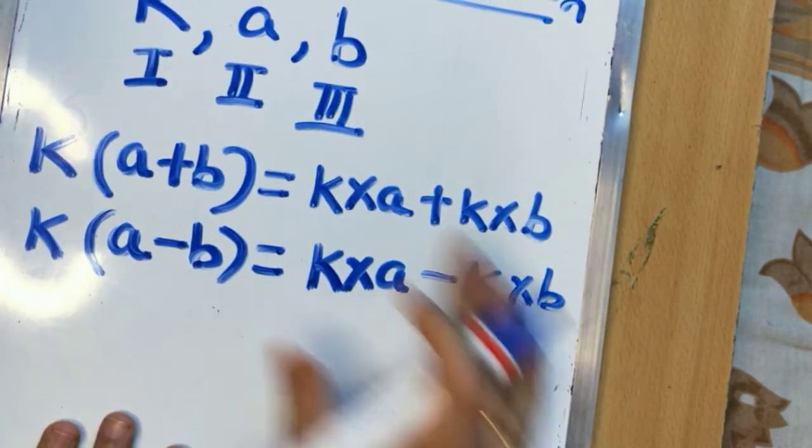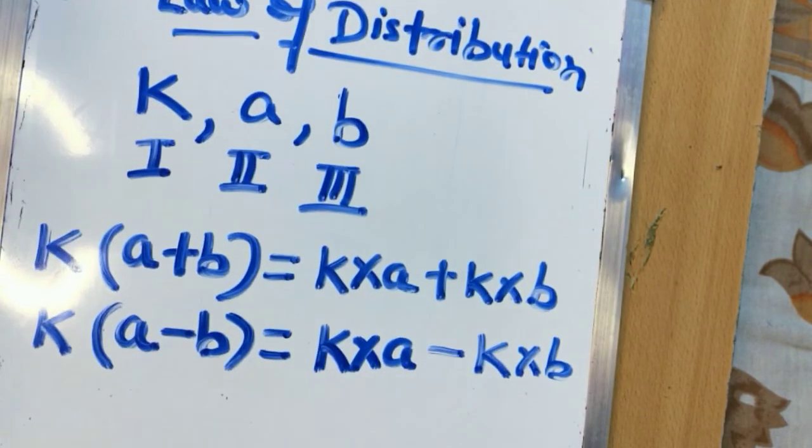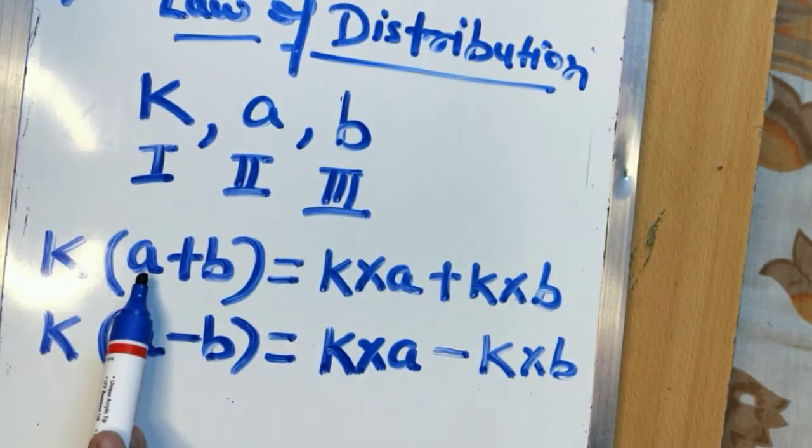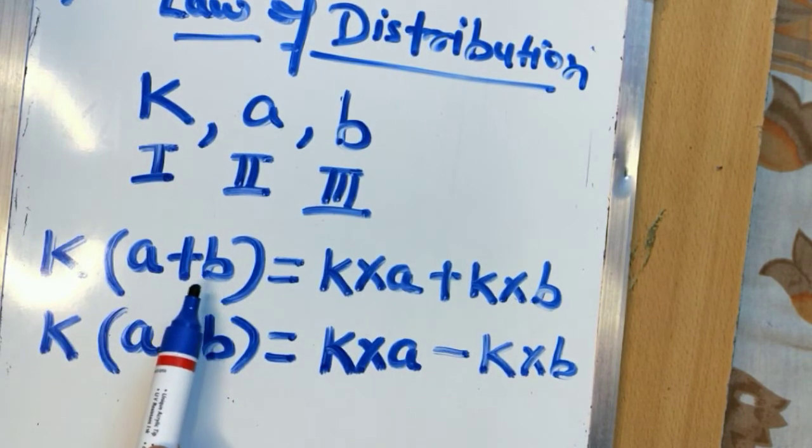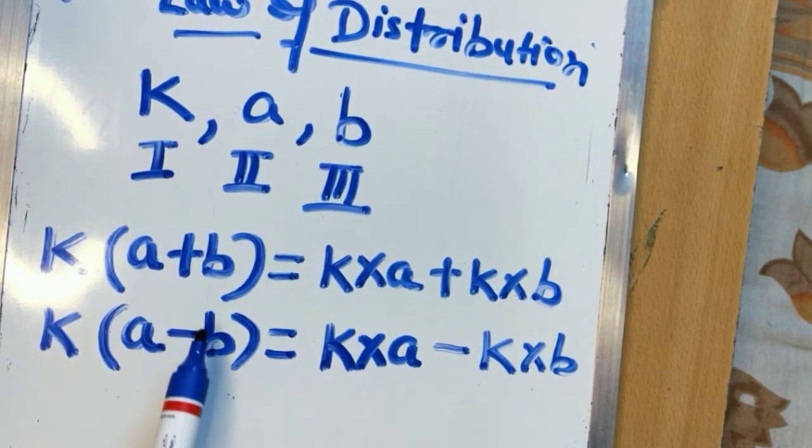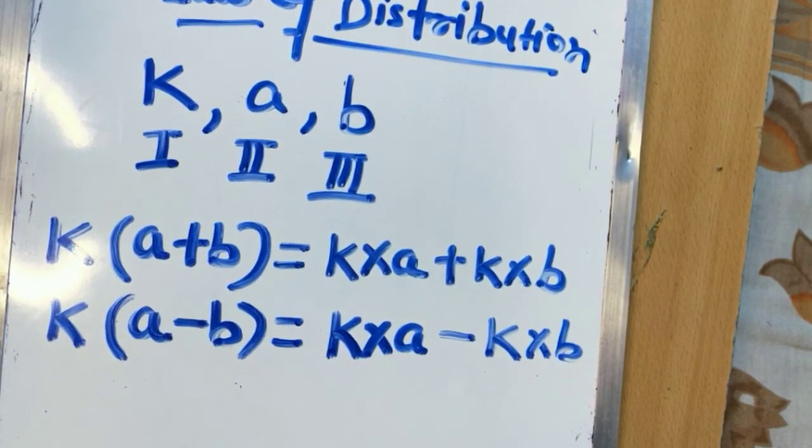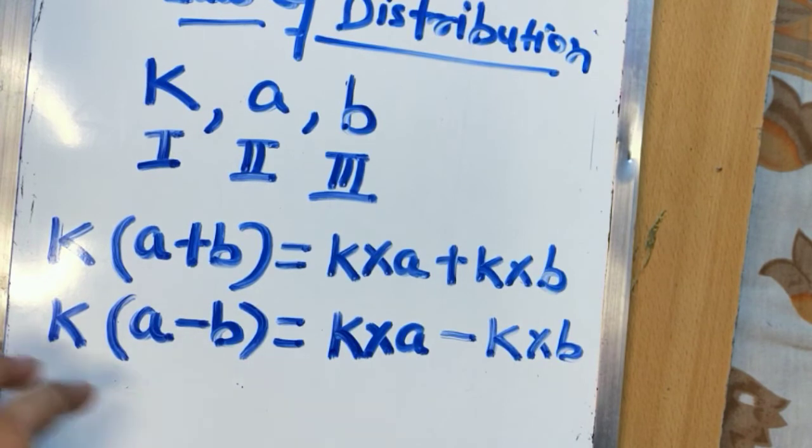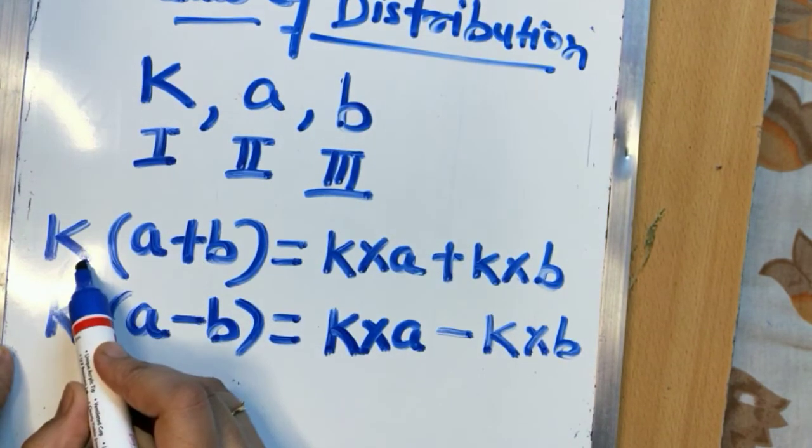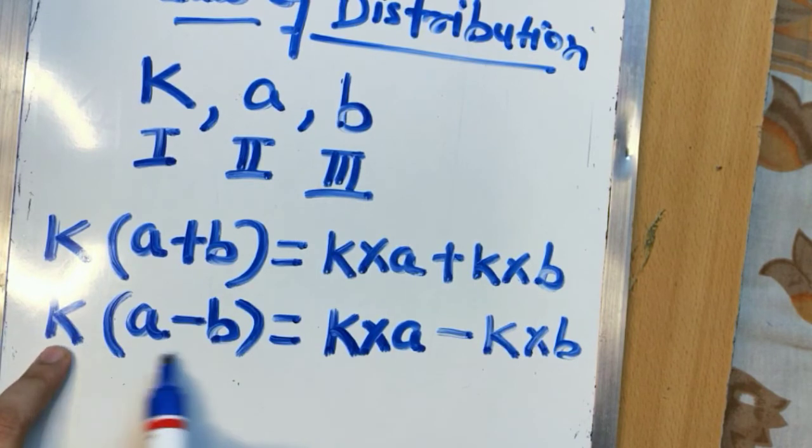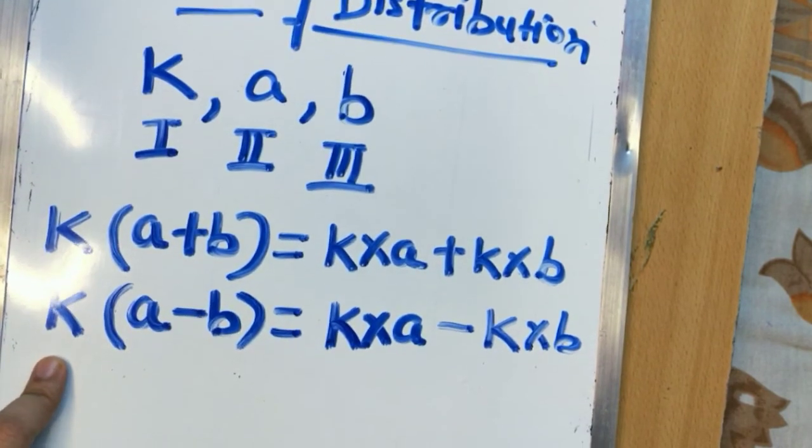Clear? This is nothing but your law of distribution. That means you are distributing this k amongst a and b. Whether it is a plus sign or minus sign that will be depending upon our question. Just keep it in mind. This k is common for both a and b and similarly this k should be common for a minus b. Clear?